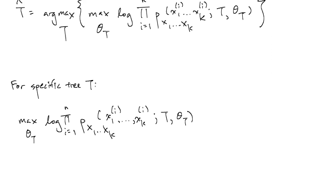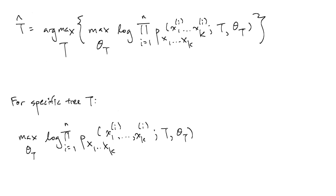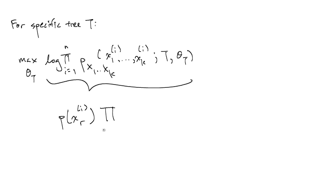Now we'll look at how to solve this optimization problem. For a specific tree t, we have the log likelihood across the training data, parameterized by both the tree and the parameters theta sub t. By the tree factorization, we can arbitrarily choose a root r. The factorization gives p of x_r for sample i, times the product over all nodes j not equal to the root of p of x_j conditioned on the parent of x_j, denoted pi of j.